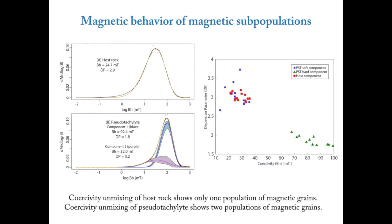For coercivity unmixing, the host rock can be fit with a single log-normal component. The pseudotachylite sample actually requires two components to fit. When we create a biplot of the median coercivity value versus the dispersion parameter — the full width half maximum — we see that the host samples have coercivities ranging from just under 20 up to about 40 millitesla and dispersion parameters between around 2.7 and 3.2. The pseudotachylite samples have that same inherited grain component, but also a much higher coercivity component — those are the newly nucleated grains present within the pseudotachylite glass.